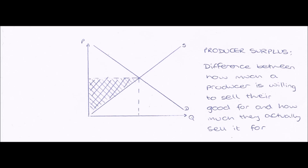If they sold it for 120 pounds, their producer surplus would be 20 pounds, because this is the difference between how much they were willing to sell at and how much they actually sold at. This can also be shown diagrammatically as shown here, where the shaded area represents producer surplus.